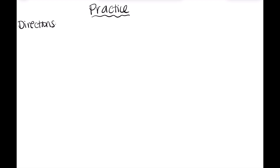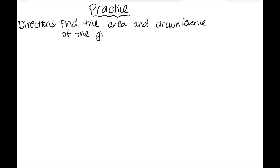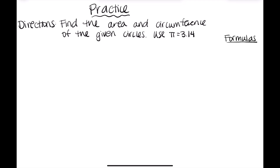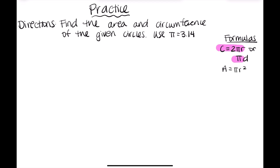Now let's get into a few practice problems. The directions say to find the area and circumference of the given circles. We're going to use pi approximately equal to 3.14. I'll also write out all of our formulas again: circumference equals 2 pi R, or pi D depending on what we're given, and area equals pi R squared.